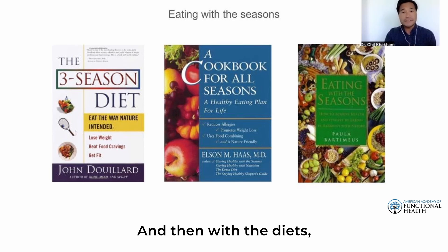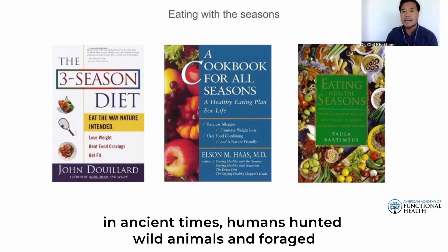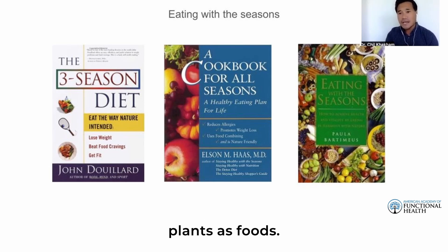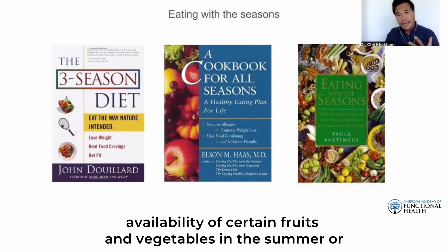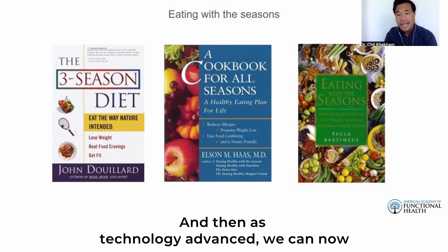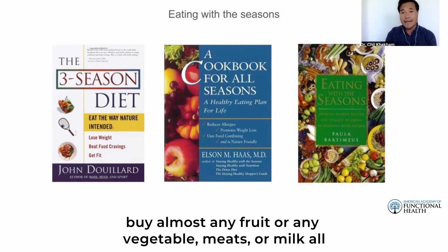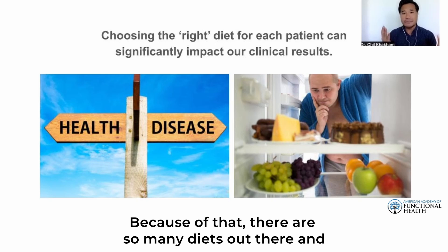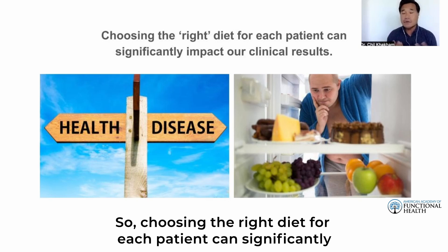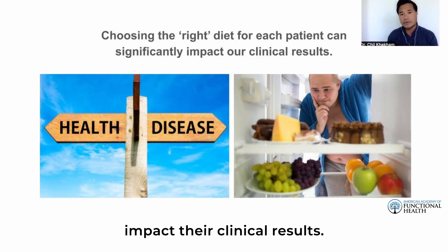In ancient times, humans hunted wild animals and foraged plants as foods. Our diet fluctuated with the seasons, such as the availability of certain fruits and vegetables in the summer or winter. As technology advanced, we can now buy almost any fruit, vegetable, meat, or milk all throughout the year. Because of that, there are so many diets out there and so many different ways of eating. Choosing the right diet for each patient can significantly impact their clinical results.